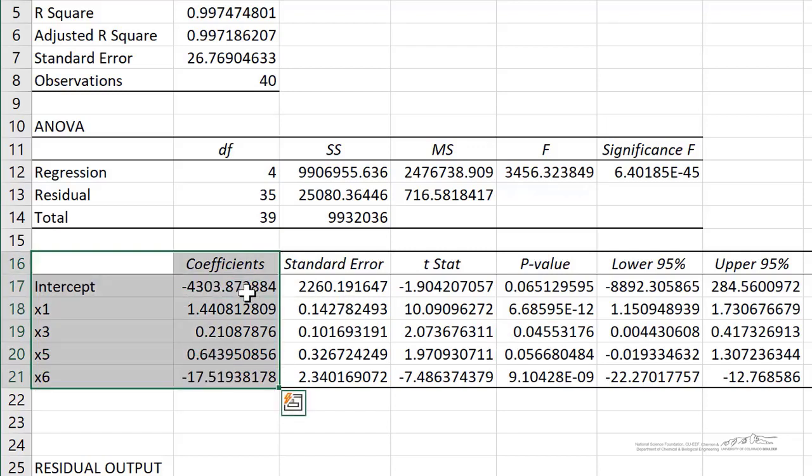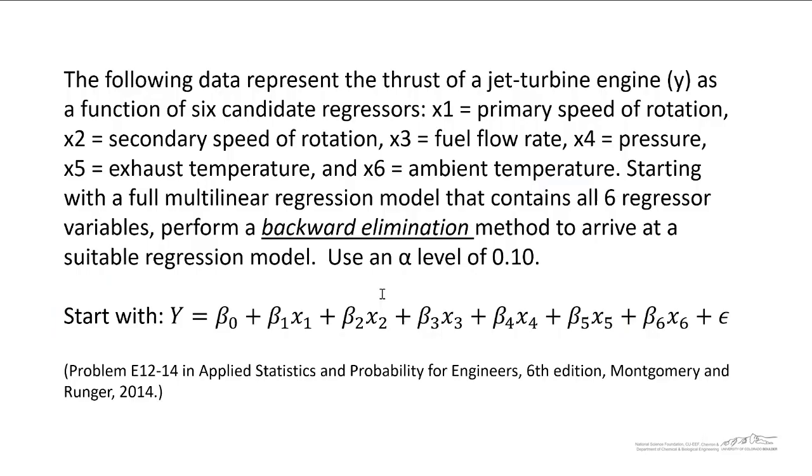And our regression is going to have these coefficients. We've got beta naught, beta 1, beta 3, beta 5, and beta 6. So those particular values would go into this model. And then we could use this as a predictive model in the future for a different combination of those six variables.